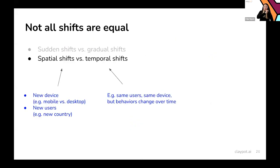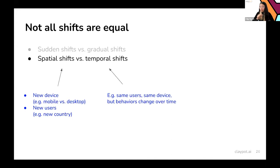Another distinction is spatial shift versus temporal shift. Spatial shift happens when you have new access patterns — for example, users switching from desktop to mobile, and user behavior on mobile is very different from desktop. Another type of spatial shift is new users from a new marketing campaign bringing an entirely different demographic. Temporal shift, on the other hand, is when you have the same users and same device, but behaviors have changed over time — and temporal shifts are really tricky to detect.